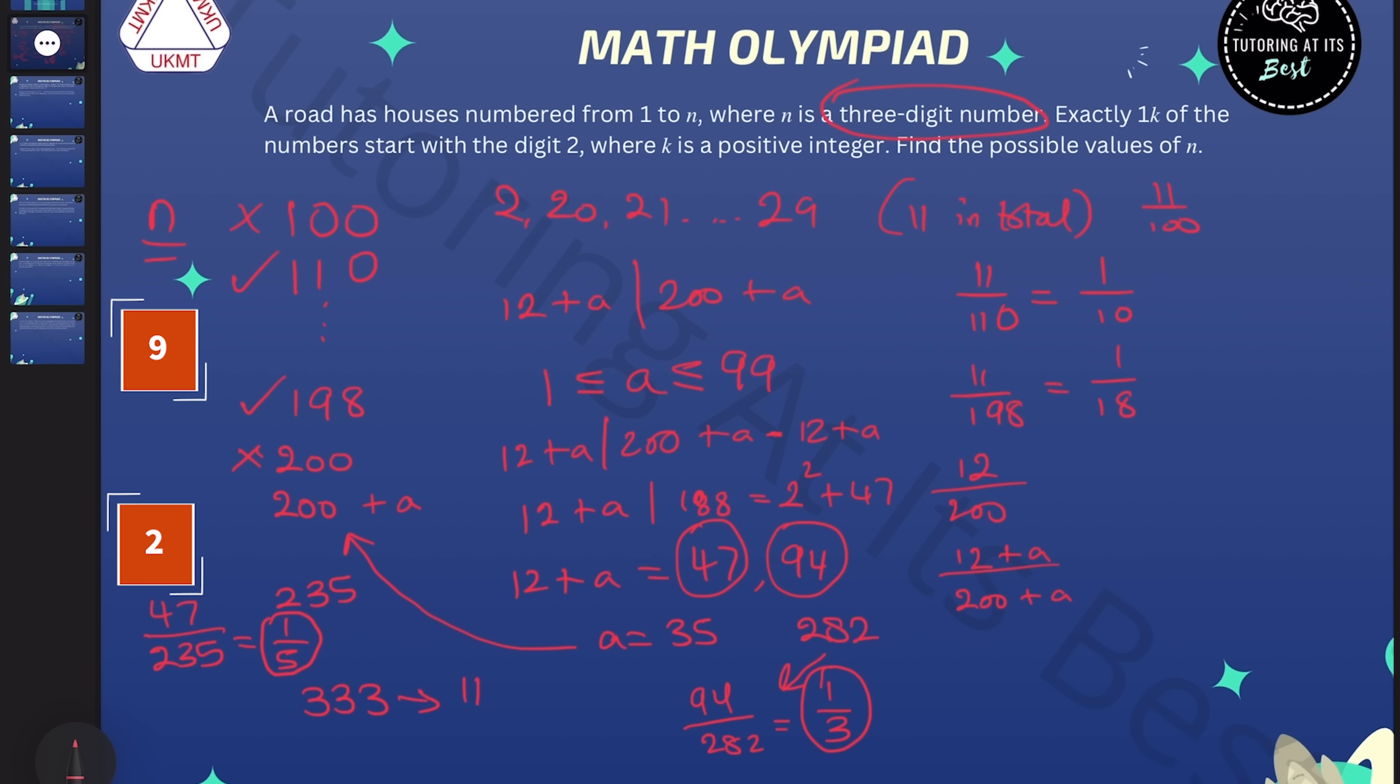So that gives us 111 over 333. But we're not going to get any more new houses that start with a 2. So we can just include all of the multiples of 111. So again, that can bring us to 999.